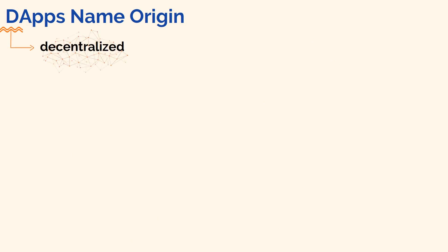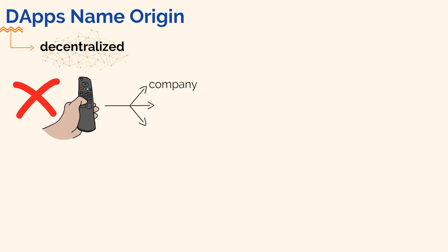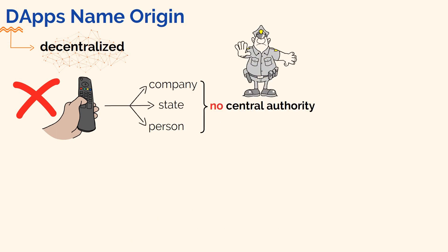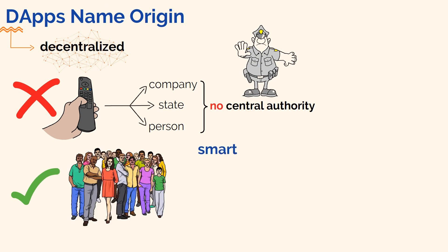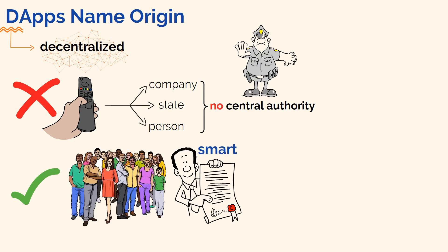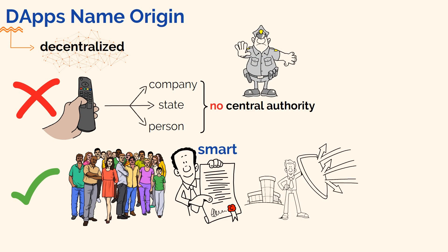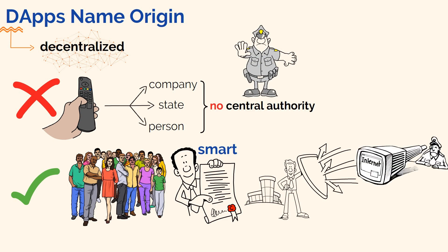So why are they called dApps anyway? You've maybe guessed by now that the 'd' in dApps stands for decentralized. This means that these apps are not controlled by any company, state, or person — basically, no central authority. Instead, they are owned and operated by a community through the smart contracts they're built on. Therefore, a pretty awesome advantage to this is that these apps are censorship resistant.